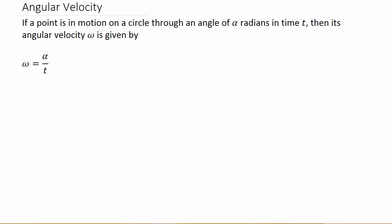All right, so in this video we're going to look at angular velocity. I'll have three different examples to do and I'll put each one of them in their own video. For angular velocity, if a point is in motion on a circle through an angle of alpha radians in time t, then its angular velocity omega is defined by omega equals alpha over t.